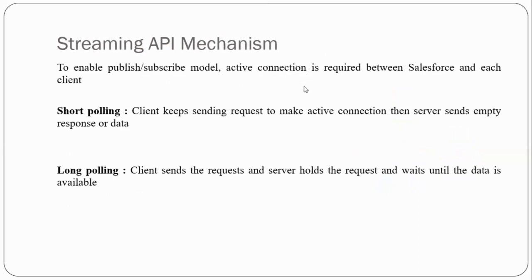To make a connection active, we have two concepts: short polling and long polling. In short polling, a client keeps sending a request to maintain an active connection. At every interval of time, the client keeps asking whether data is available or not. If data is available, it sends that data; if data is not available at the server side, it sends empty data. This keeps requests going to maintain an active connection regularly, and it uses a lot of resources.